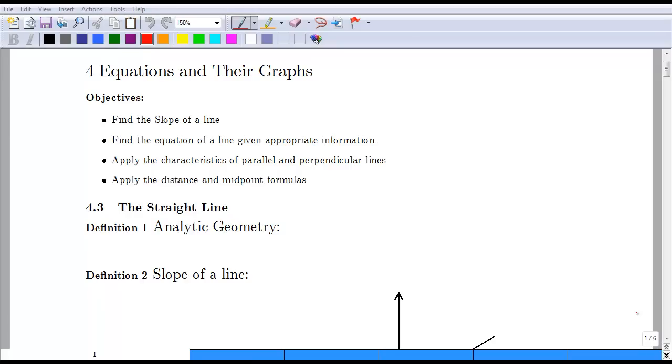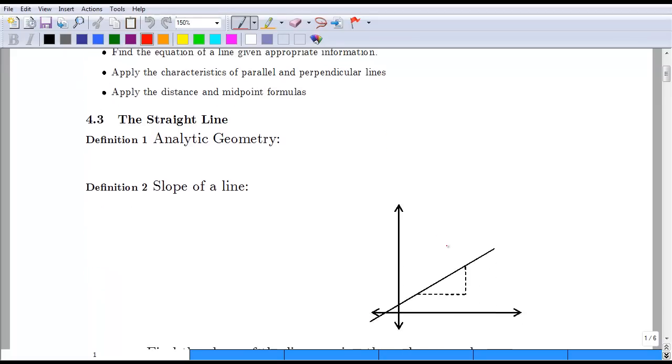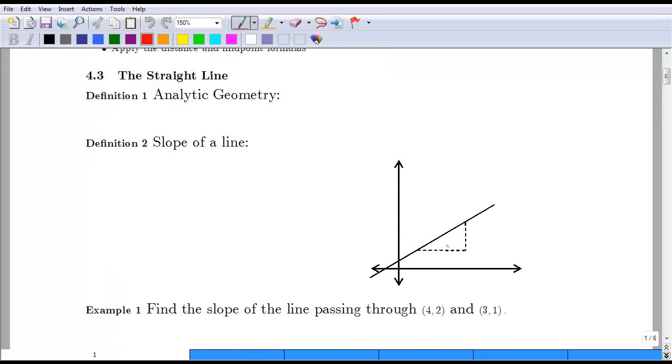This is the first lesson in Chapter 4, which deals with equations and their graphs. We are only going to be looking at Sections 4.3, 4.4, and 4.5 from this chapter. We're going to start off today with Section 4.3, which deals with straight lines.